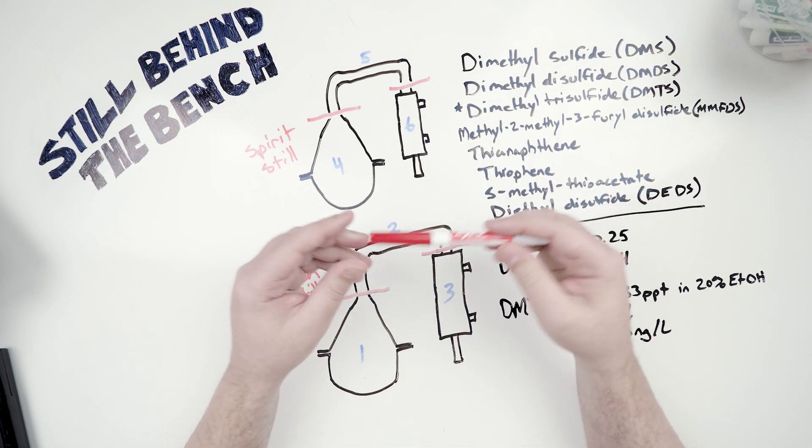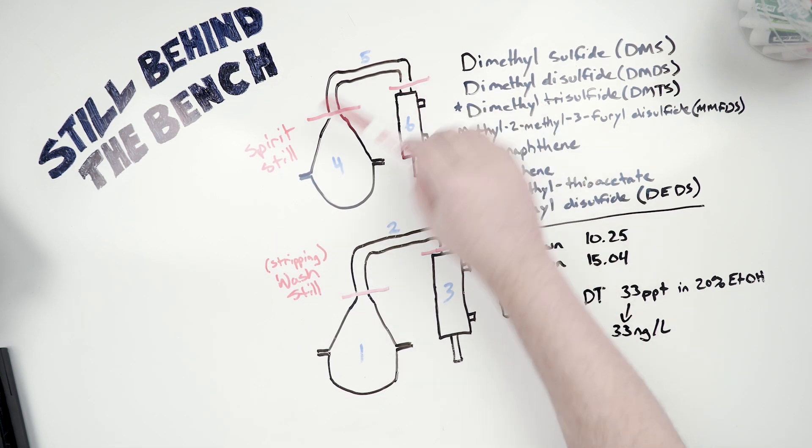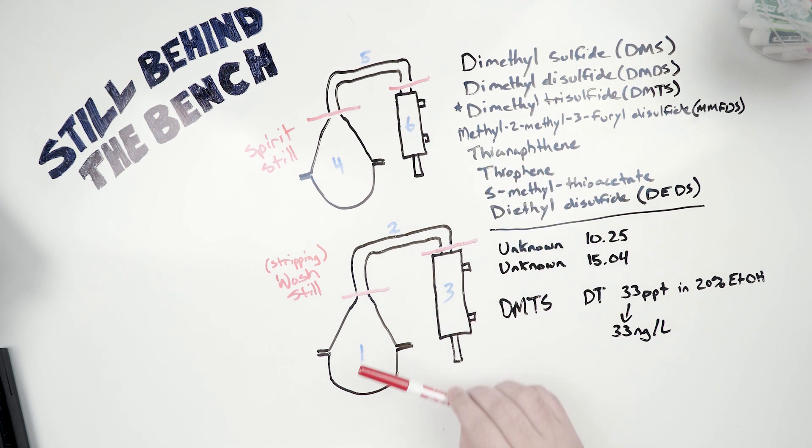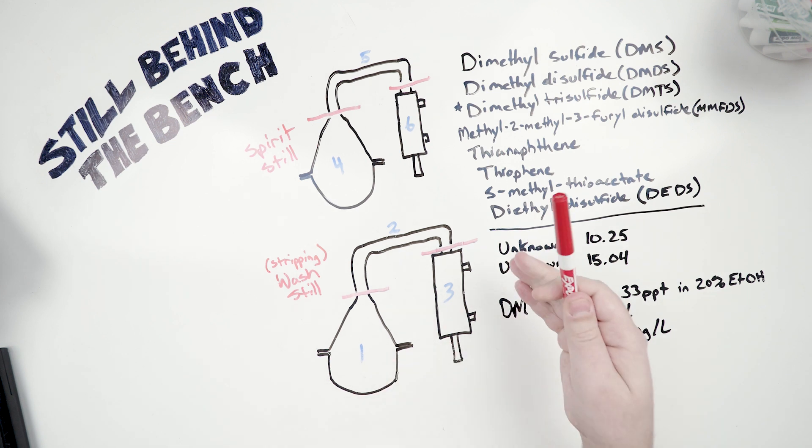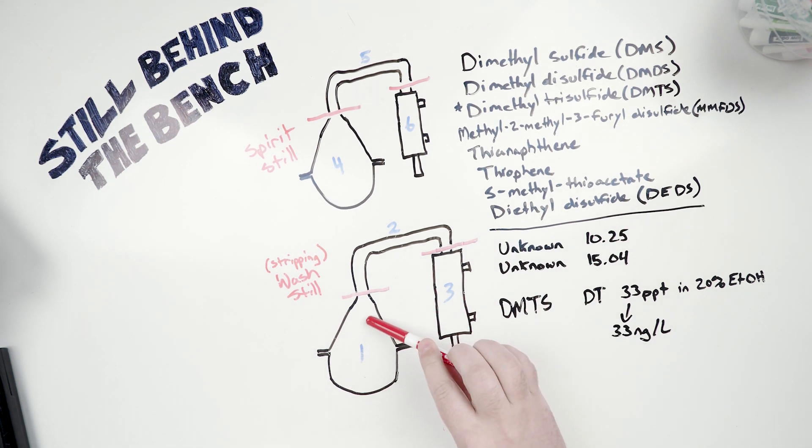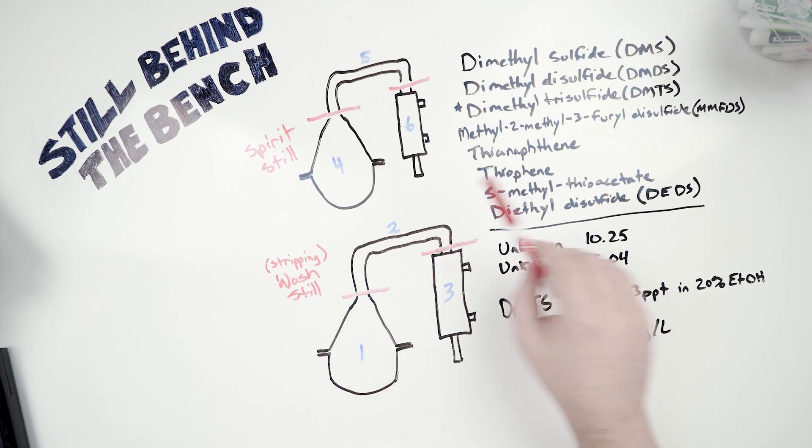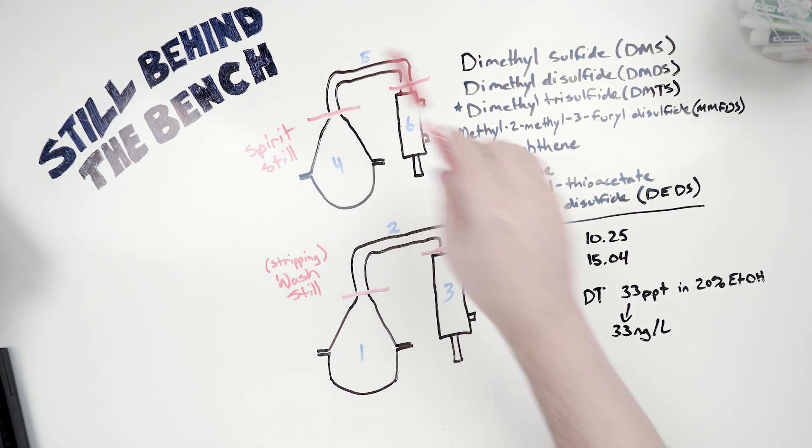All right, so for the other tests, what they did was they had their two stills set up, and for the first experiment, they would take the stainless steel wash still boiler, and they would swap it out with a copper one. So everything else is stainless steel, except for the boiler. Then they'd run their tests three times, and what they'd do is they'd put the stainless steel boiler back in, and then they would replace the wash still's line arm with a copper line arm, and they'd do three tests, and they'd repeat that, singularly replacing each part of the wash still, and then the spirit still.